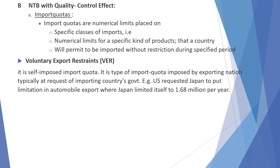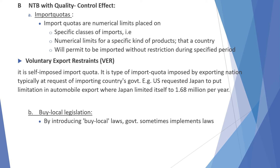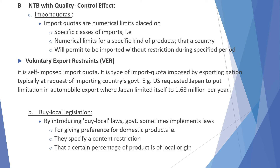For example, the US requested Japan to put a limitation on automobile exports, where Japan limited itself to 1.68 million vehicles per year. Next is buy-local legislation, introduced by local laws, where the government implements laws giving preference to domestic products by specifying a content restriction — that a certain percentage of the product must be of local origin.